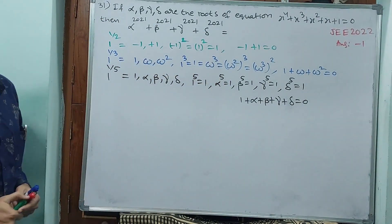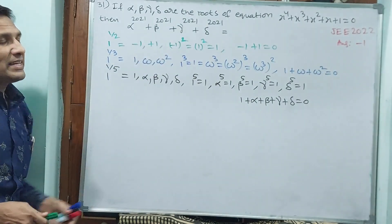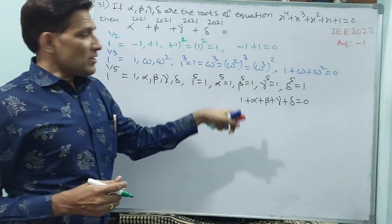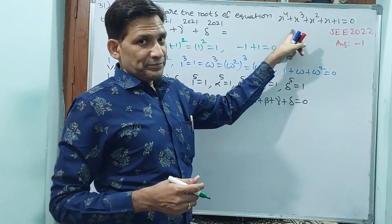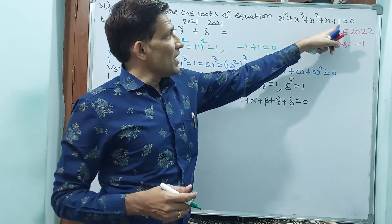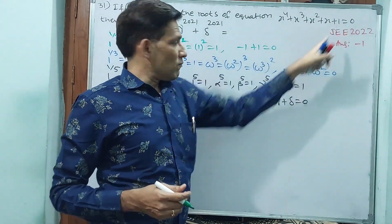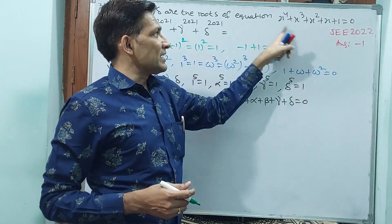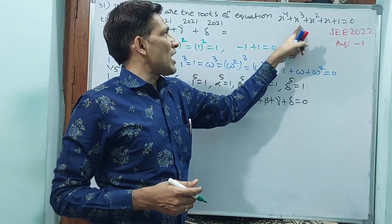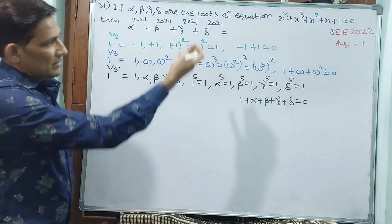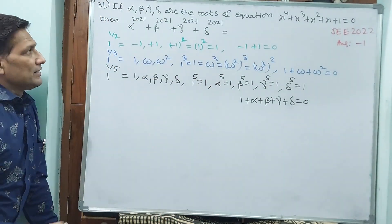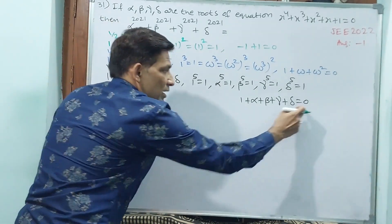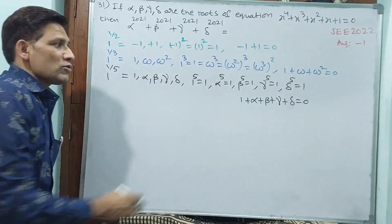Now go back and see the equation. Do you see? These are the fifth roots of unity. 1 is one root, and alpha, beta, gamma, delta are the remaining 4 roots. That means alpha plus beta plus gamma plus delta equals minus 1, because when 1 is moved to the other side from the sum-equals-zero relation.